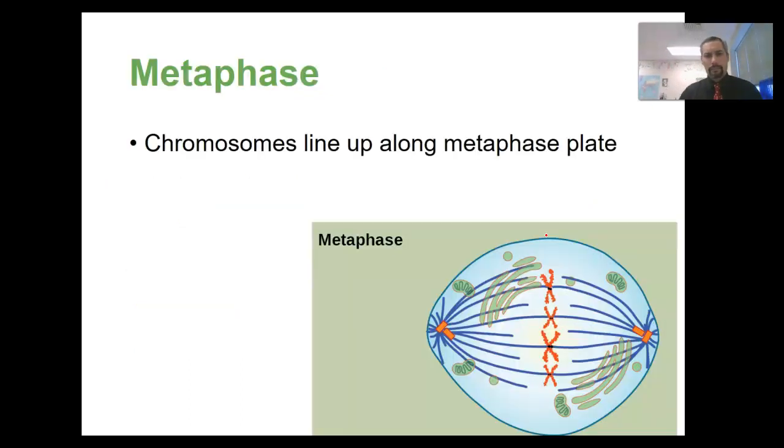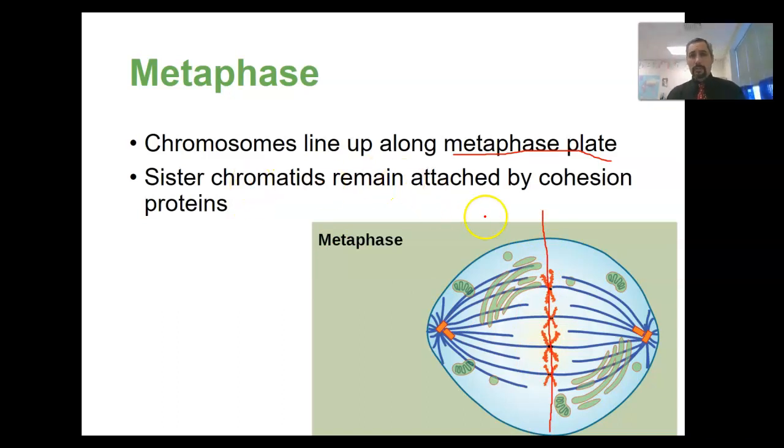During metaphase, we have this metaphase plate forming. Now, this is not an actual physical structure. This is more like a geometric plane, and that is going to be lined up right basically straight down along here. That's going to be your metaphase plate is this geometric plane right down the middle across here. The sister chromatids remain attached by these cohesion proteins. They're still attached to each other, but they have these microtubules that are now connecting to these spindles going out to the ends of the poles of the cell out here.